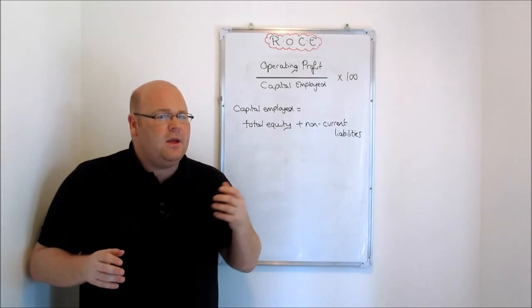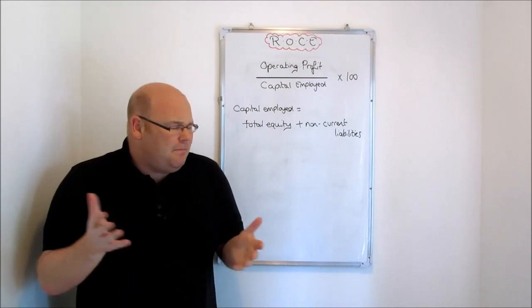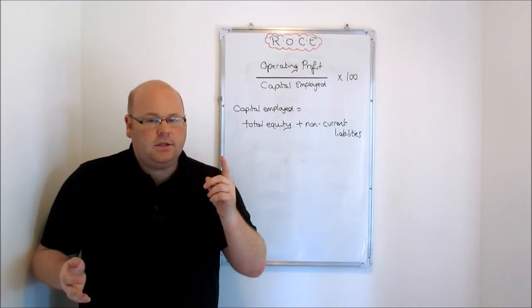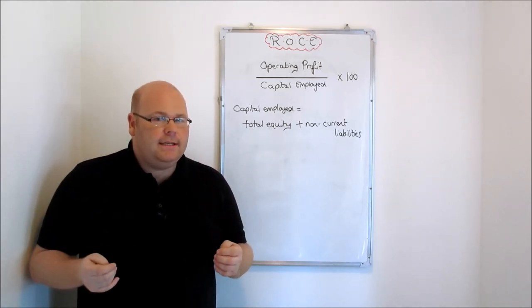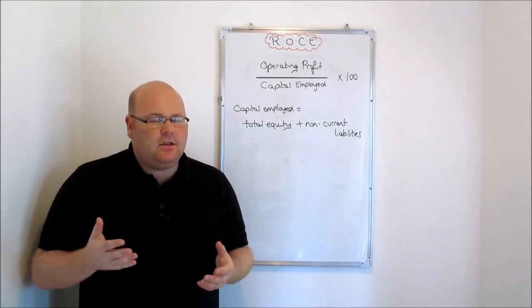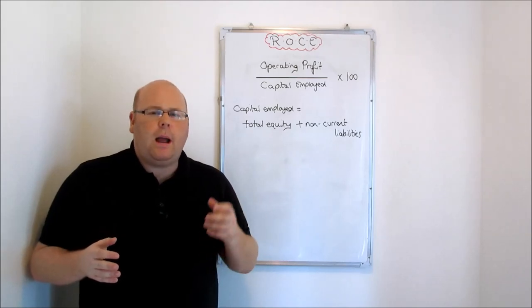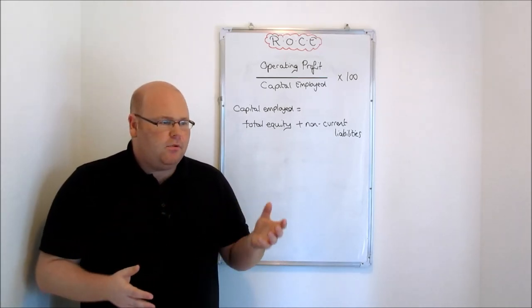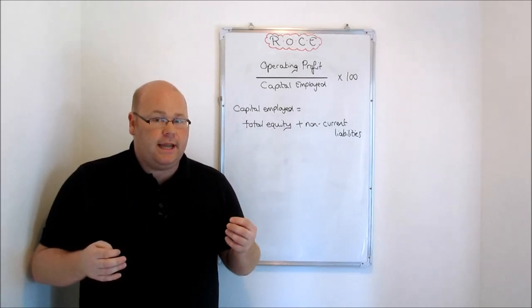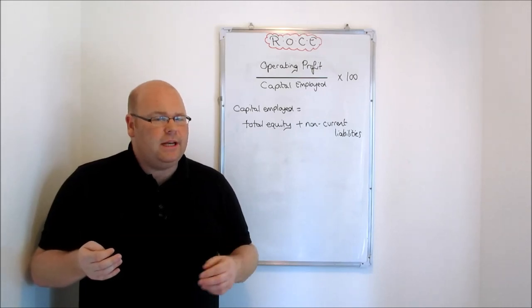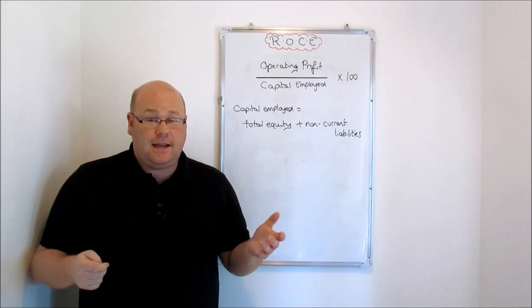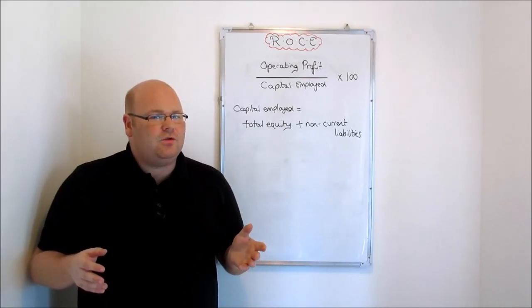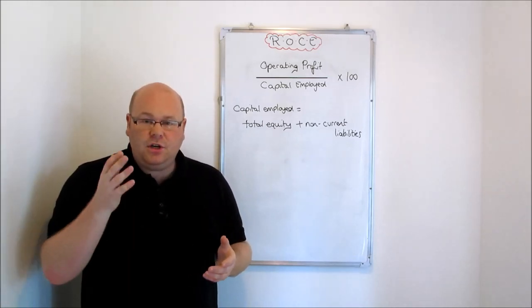There are a couple of things with the ROCE we might want to watch out for — things the business may have done that could artificially inflate it beyond a true reflection of management performance. The first is whether the business has bolstered its operating profit through a one-off sale of an asset it no longer requires. That's what we refer to as poor quality profit — poor quality because it can't be replicated. Selling off an old factory or property might artificially boost operating profit for a year, thus increasing ROCE, but we can't bank on selling off property every year.